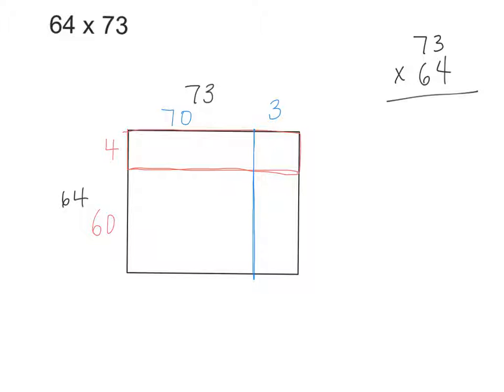So how would I find the area of this rectangle right here? You could do 4 times 70. And is that way easier than 4 times 73? Yeah. So what's 4 times 7? 28. And then how many factors of 10 do I have? One. So I need to add one zero. So that partial product is 280.